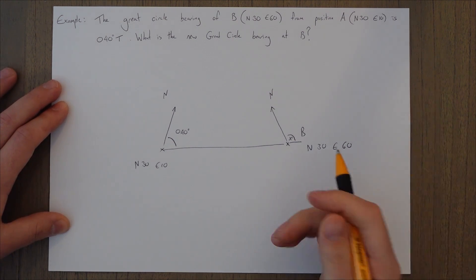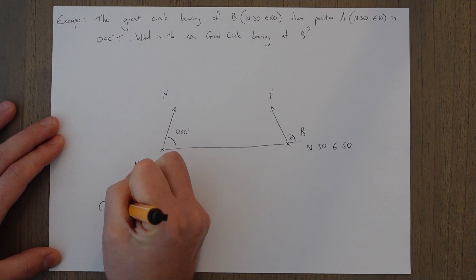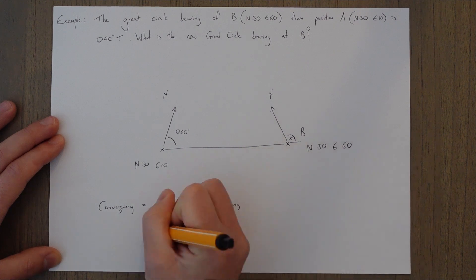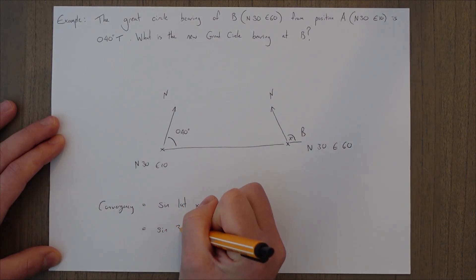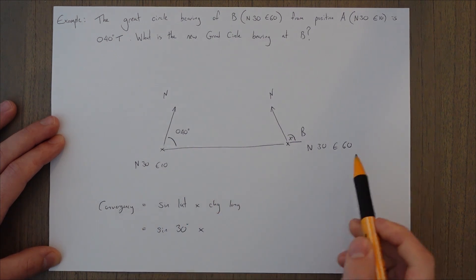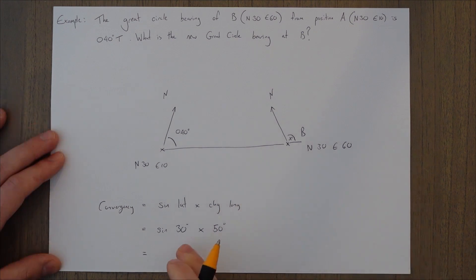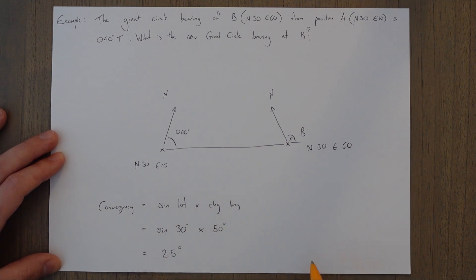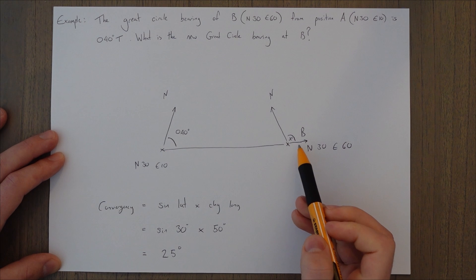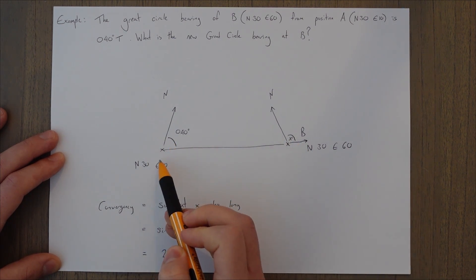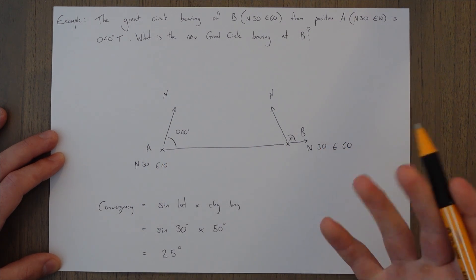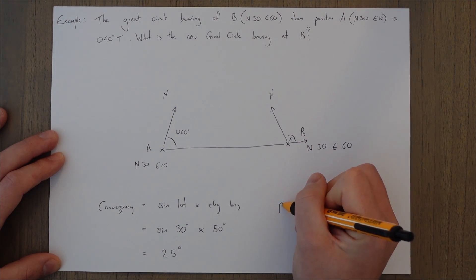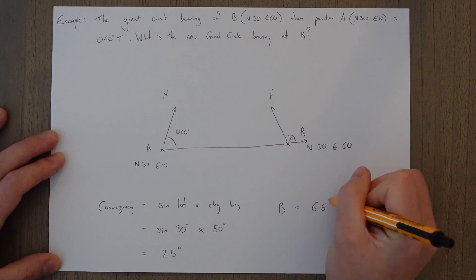Let's use our equation to figure this out. Convergency equals sine latitude times the change in longitude. Sine of the latitude is 30 degrees. The change in longitude is from East 10 to East 60, which is 50. Sine 30 is a half, times 50 — our convergency is 25 degrees. From our picture, we can clearly see that the angle at B is bigger than the angle at point A, so we have to add this onto our original angle. The great circle bearing at B is going to be 40 plus 25 equals 65 degrees true.